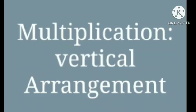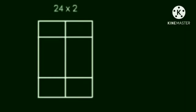Multiplication vertical arrangement. Now, see the examples 24 into 2. First, we will make the columns of 10s and units.